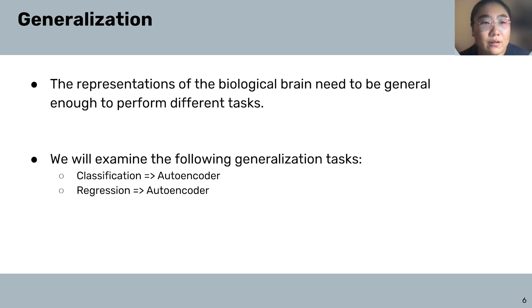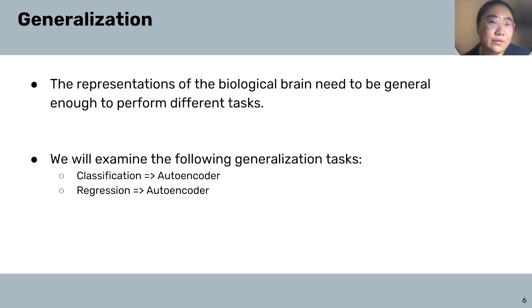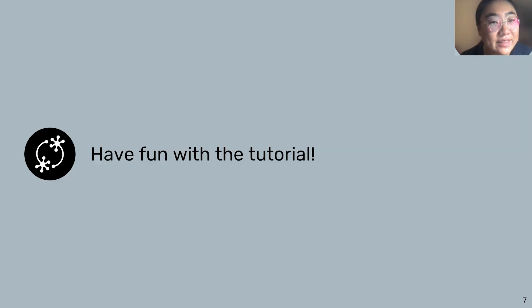Specifically, we will use the network trained on a classification problem to assess its auto-encoding performance, and also compare it with networks trained on a regression task. We will reflect on the difference in performance between these two generalization paradigms, and we would like you to think about the reasons behind that difference. Thank you for your attention and have fun with the tutorial.